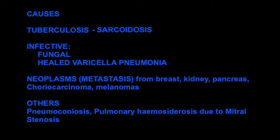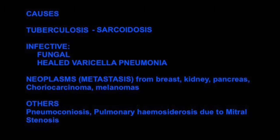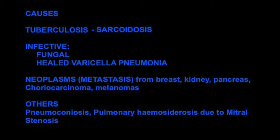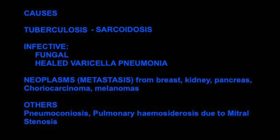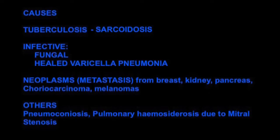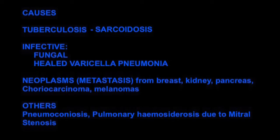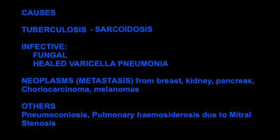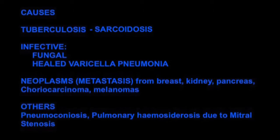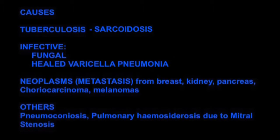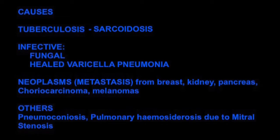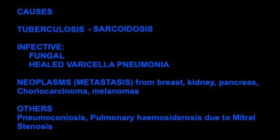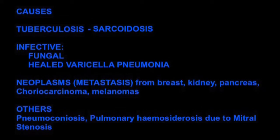Besides tuberculosis, we look at sarcoidosis. There could be infective causes, especially in immunocompromised patients, where fungal infections can give rise to such a pattern. A healed varicella pneumonia can also give rise to this pattern, though those lesions would be slightly larger and very often calcified. Metastasis is another differential that we need to consider, especially those arising from breast, the kidneys, the pancreas, and also melanomas.